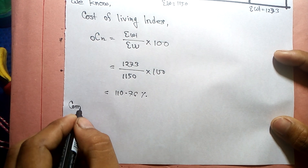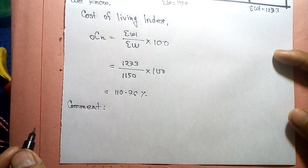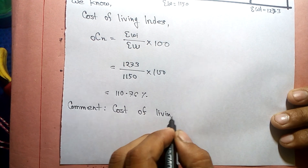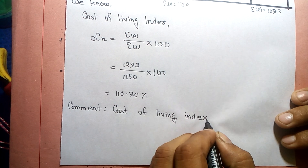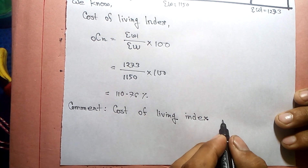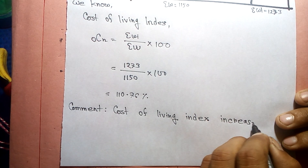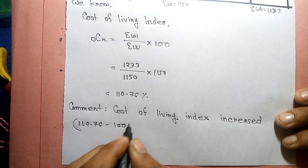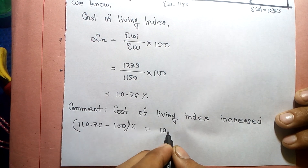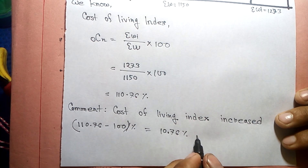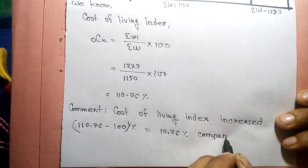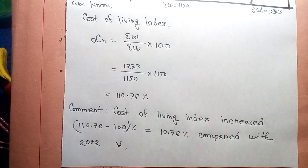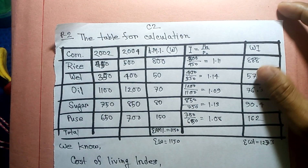Now we can comment on the result. The cost of living index has actually increased. This means the cost of living increased compared to the base year. The index increased by a certain percent compared to the other period, indicating a rise in living expenses.